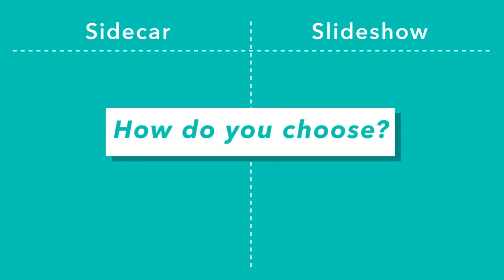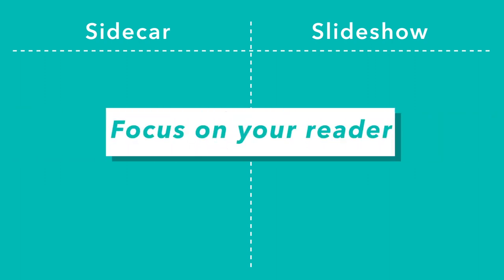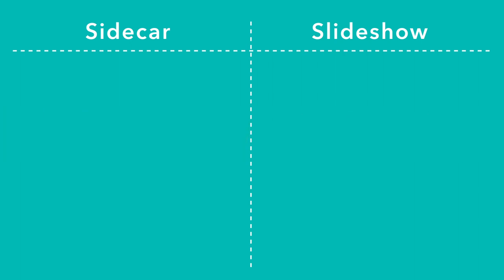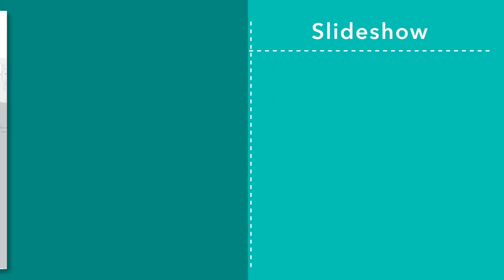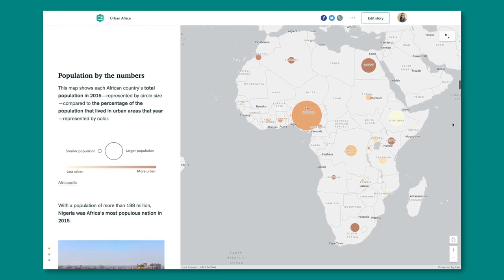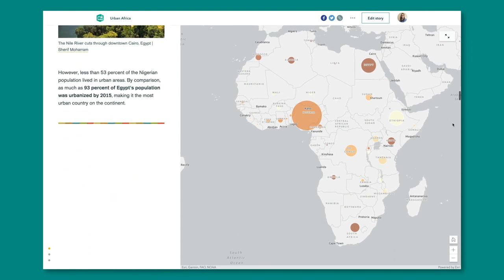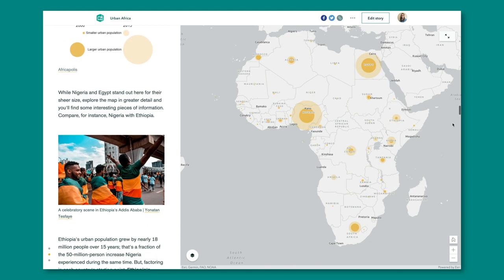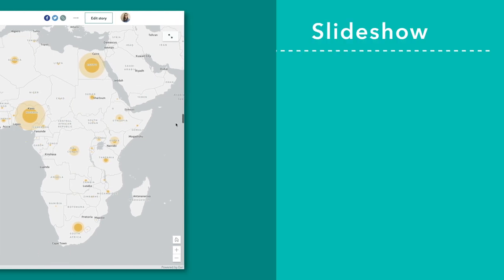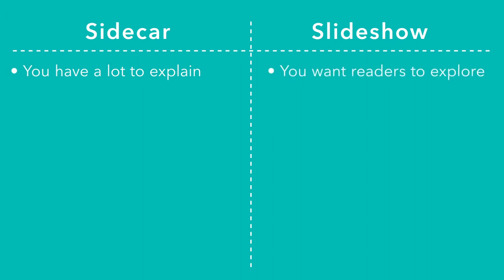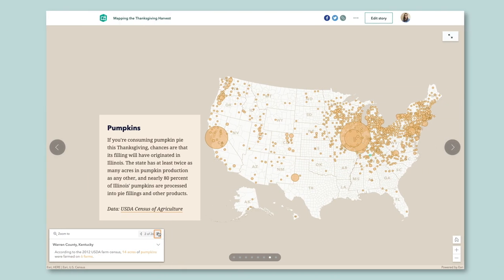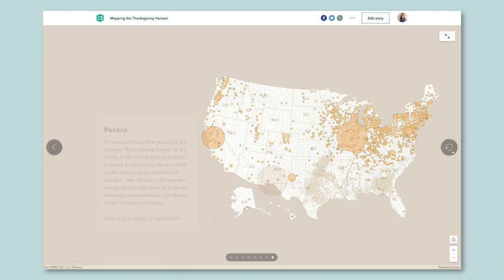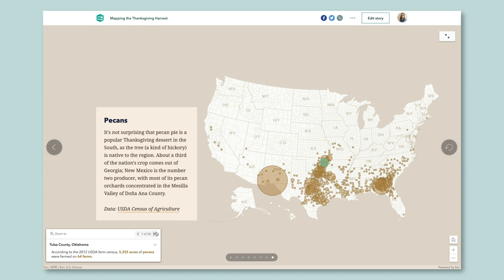How does this influence when you should use each block? It all comes down to the reader experience. If you have a map that requires a lot of supporting explanation, you're going to need Sidecar's scrolling narrative panel to fit all that text. You might also want to add in your map legend or a photo that helps put your visualized data into context. If your media is pretty self-explanatory, or maybe you've already covered the data and cartographic choices behind your map at length, you could consider featuring it in a slideshow and letting a reader take everything in on their own.